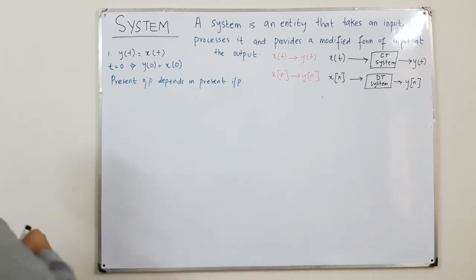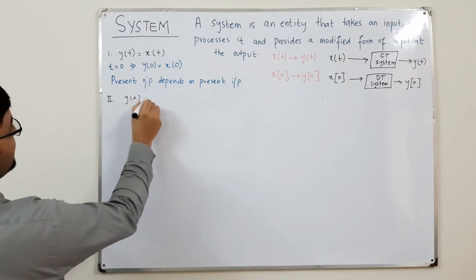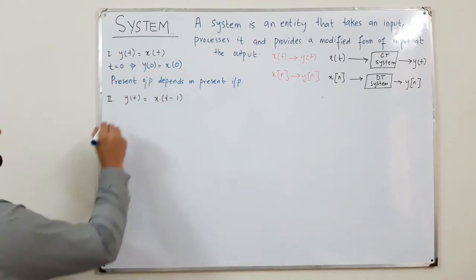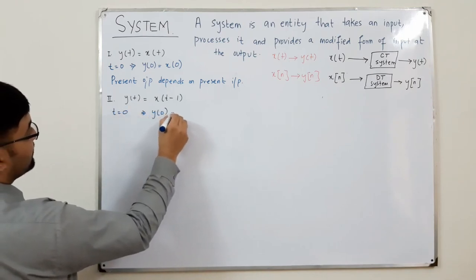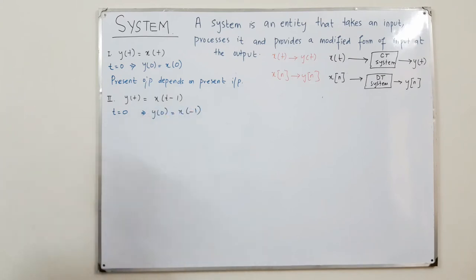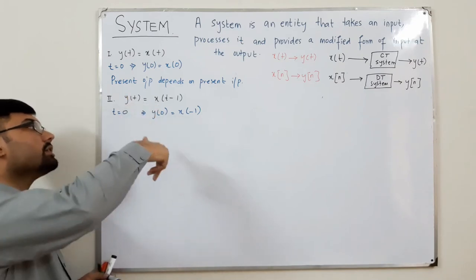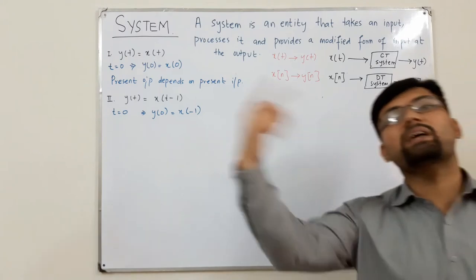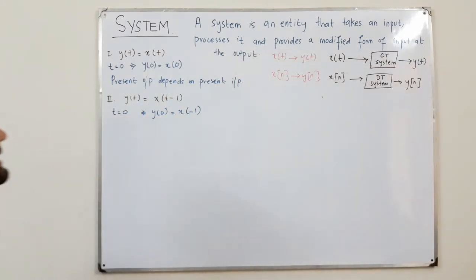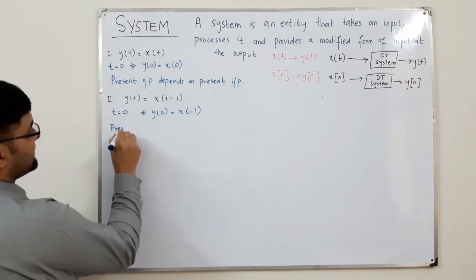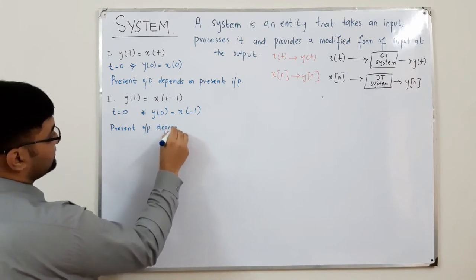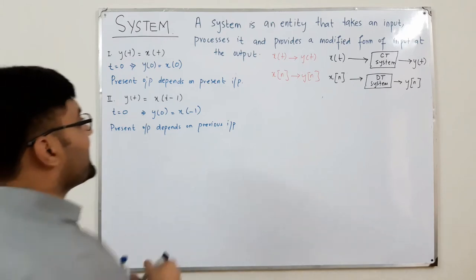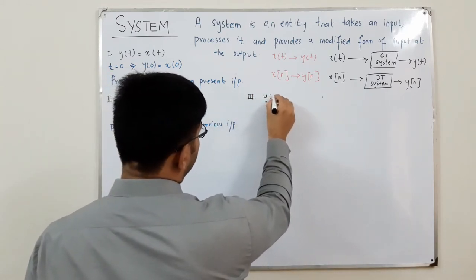For the second case, y(t) = x(t-1). At t=0, y(0) = x(-1). Since x is the input, y(0) is the present output depending on x(-1), which is the previous input. So the present output depends on the previous input.